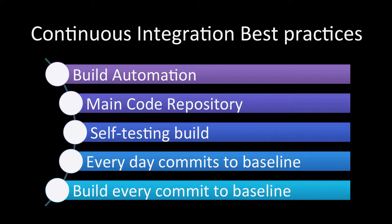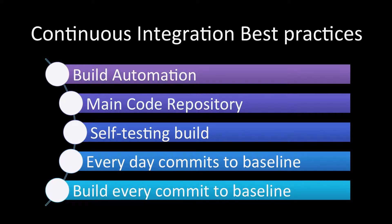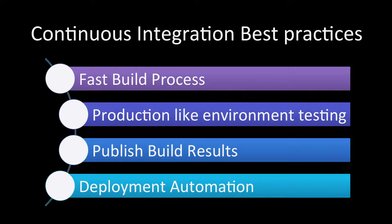There are many best practices of continuous integration and they can vary according to your organization, its culture, and the kind of software you're trying to support. But some of the main ones are: build automation, main code repository, self-testing build, everyday commits to baseline, build every commit to baseline, fast build process, production-like environment testing, published build results, and deployment automation.